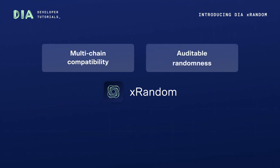Second, verifiable randomness: all random values provided by DIA are verifiable off-chain. Before becoming available to consuming smart contracts, the Oracle is not capable of manipulating the generated result if received from DRAND.